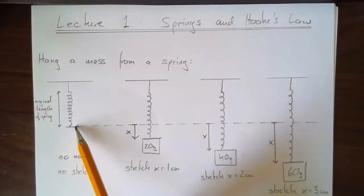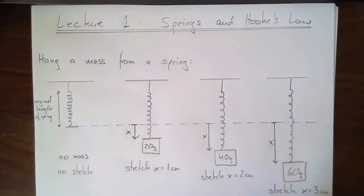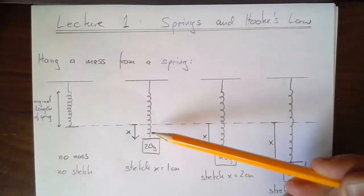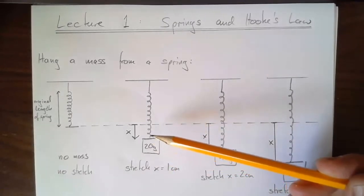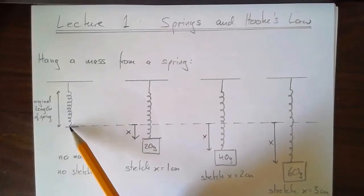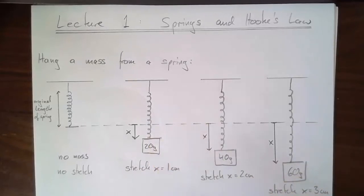Let the bottom of the spring be our reference line. Now I'll hang masses from the spring. As I do that, it will stretch the spring. For example, here I've hung 20 grams from it, and I can measure how far this pulls down the end of the spring — that distance from the original bottom to the new position is how much the spring has stretched.